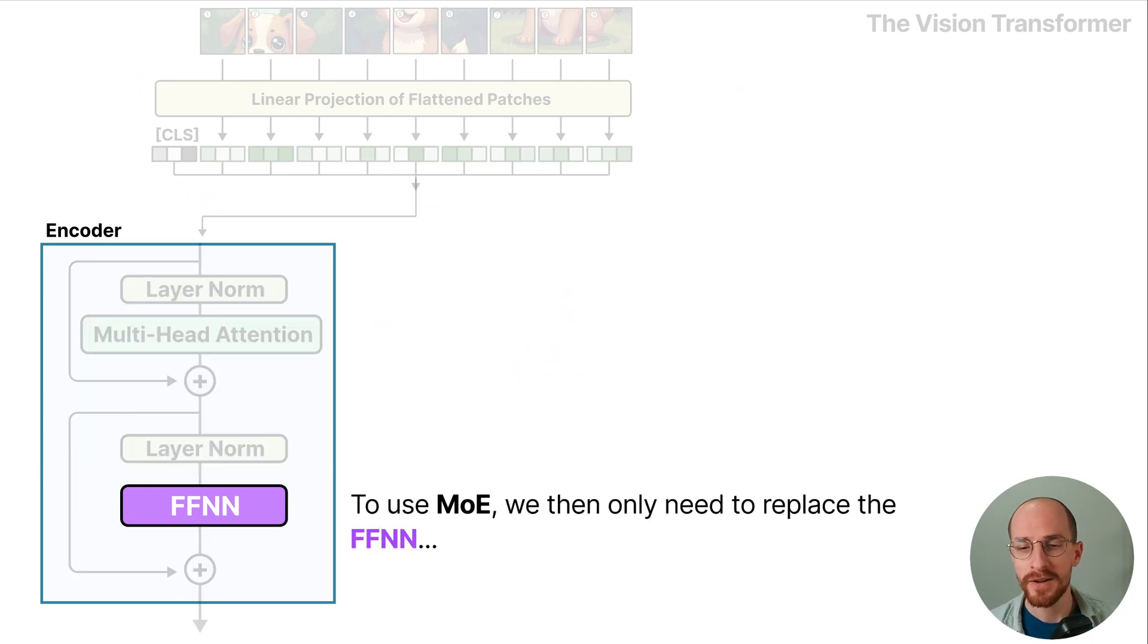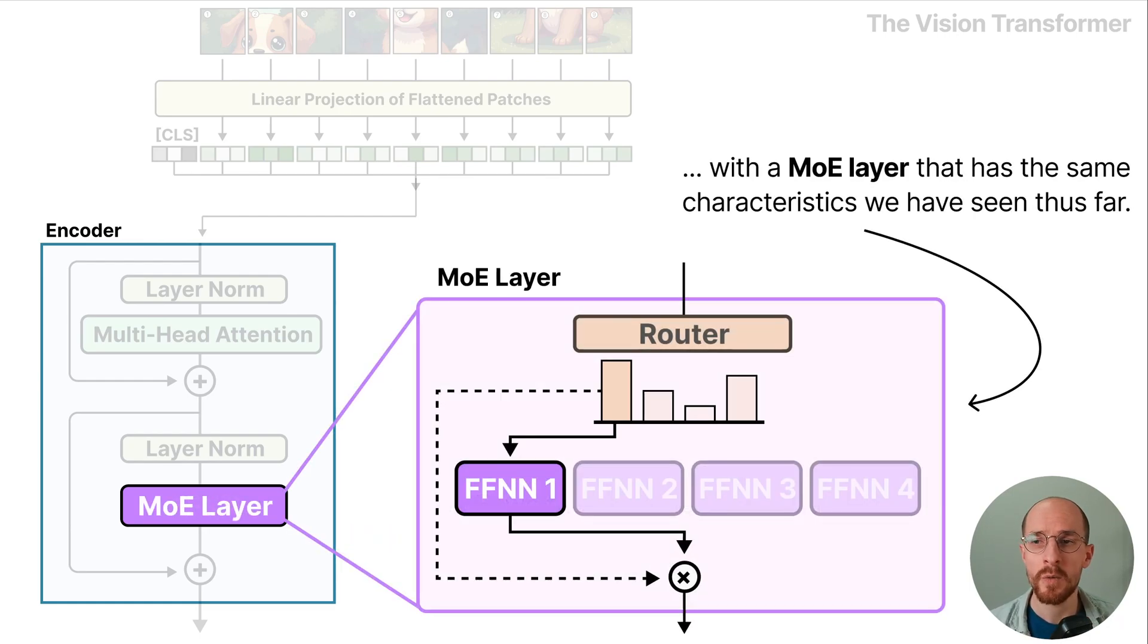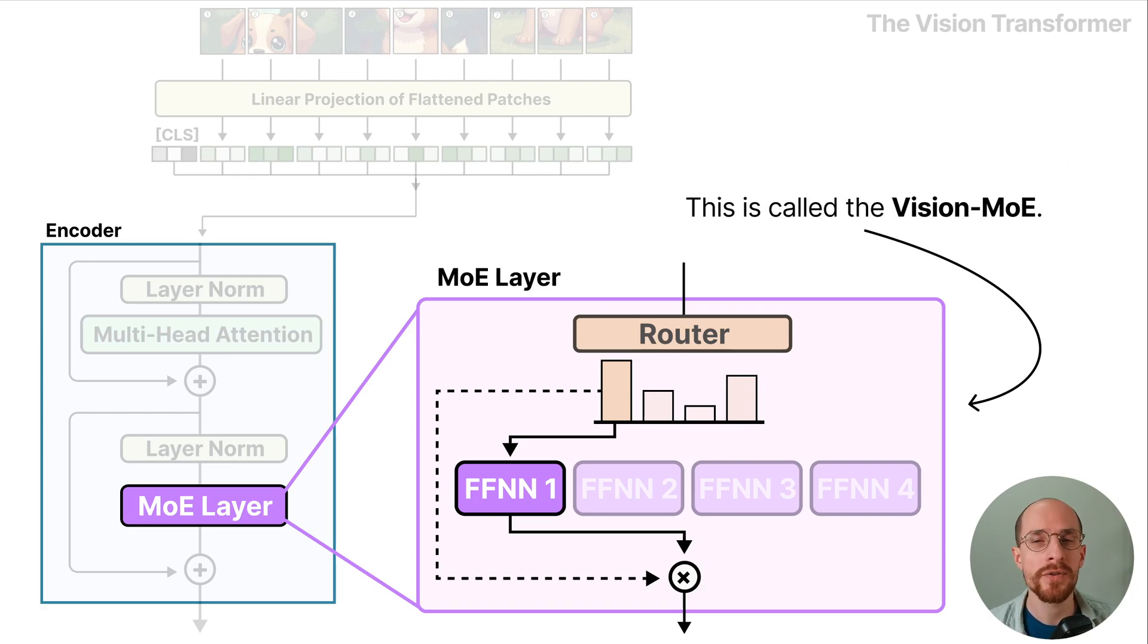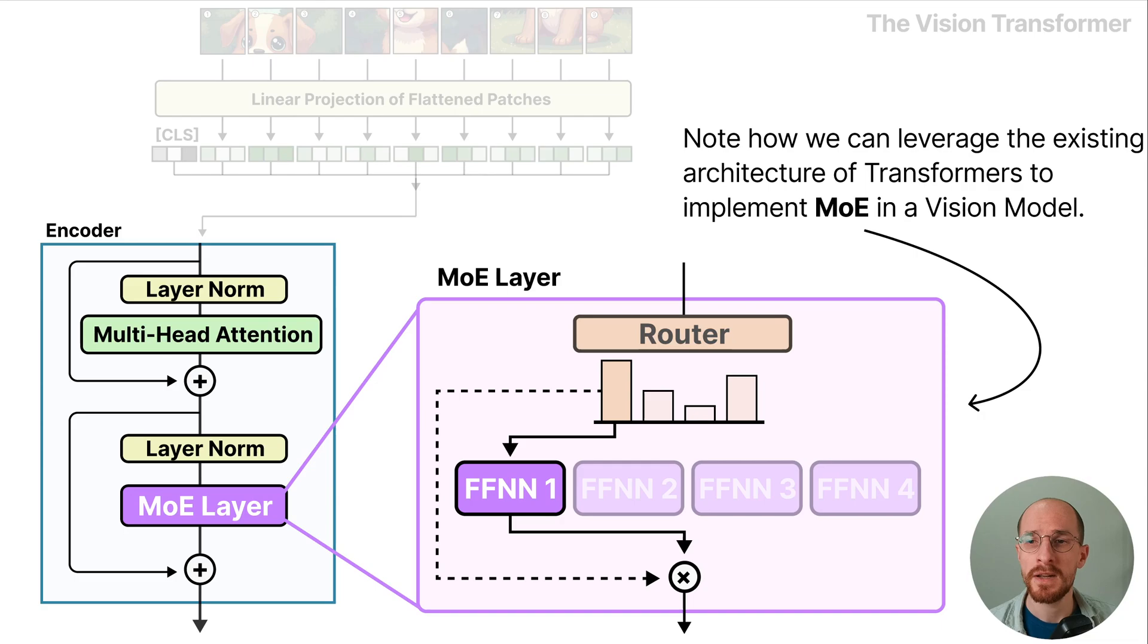To use MoE we then only need to replace the feed forward neural network with a MoE layer that has the same characteristics that we've seen thus far. And this is called the vision MoE. Note how we can leverage the existing architecture of transformers to implement MoE in a vision model.